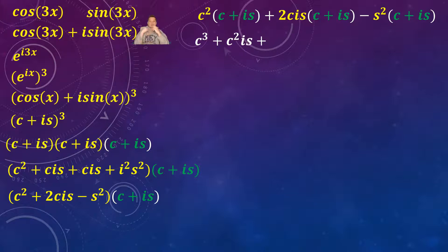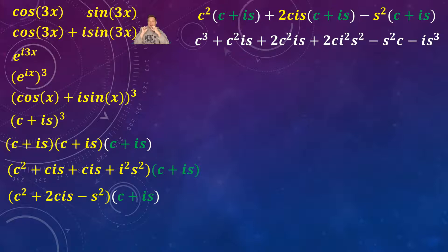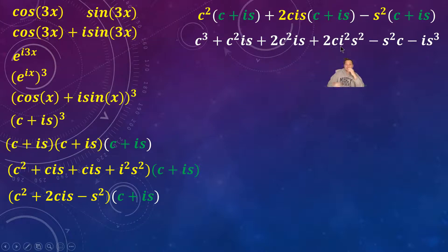After distributing, it's going to be: c cubed plus c squared·i·s plus 2c·i·s squared plus 2c·i·s squared·s squared minus s squared·c minus i·s cubed. Also observe that there's an i squared term here — you want to replace that with negative one as a first step.